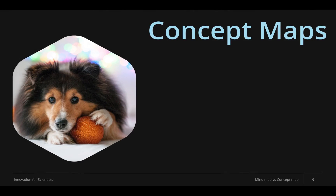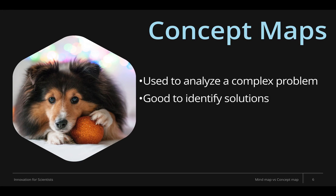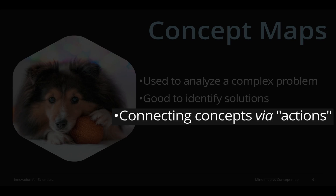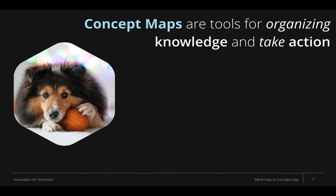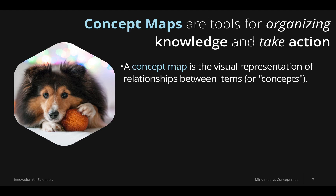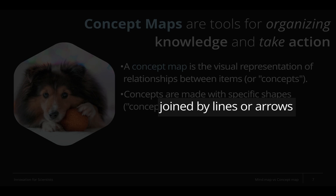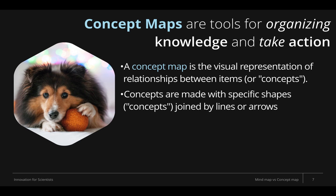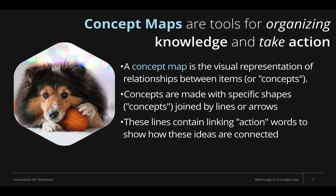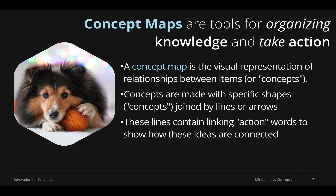Unlike mind maps, concept maps are used when you need to analyze a complex problem. They are very good to identify solutions and they allow you to connect concepts with actions. So concept maps are mostly a tool for organizing knowledge and taking action. A concept map is a visual representation of relationships between items or concepts. These concepts are usually displayed with specific shapes related to the type of concept described, and they are joined by lines or arrows that give direction to the connections. Unlike mind maps, the lines in concept maps usually contain linking action words — verbs — to show how ideas are connected.